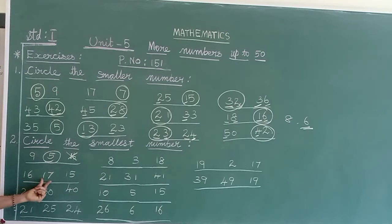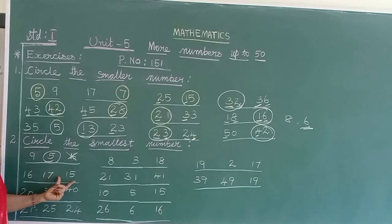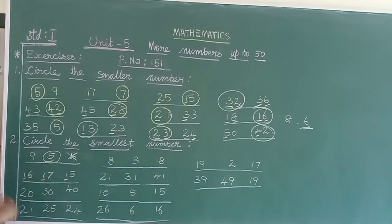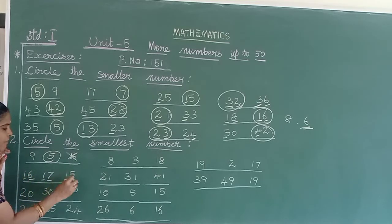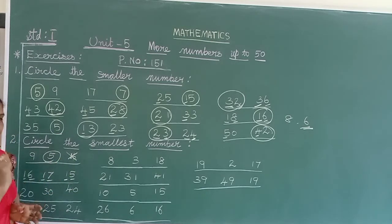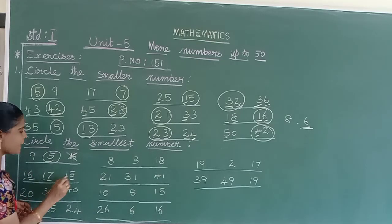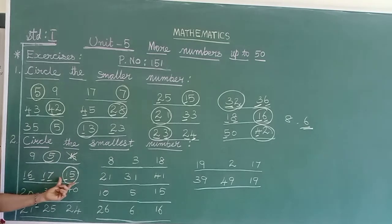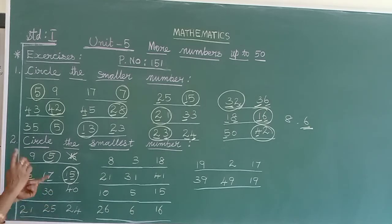Next sum: 16, 17, 15. All numbers are 2-digit. Come to the tens digit — all three numbers have the same tens digit, 1. So move on to the ones column: 6, 7, 5. Which is the smallest? 5 is near to the number 1, and the number near to 1 is smaller. So 15 is smaller than 16, smaller than 17 — 15 is the smallest one.